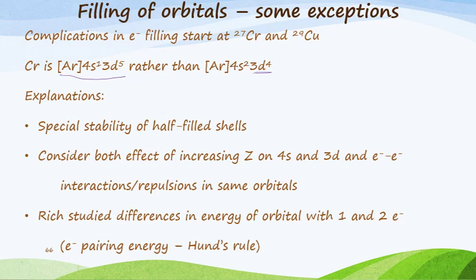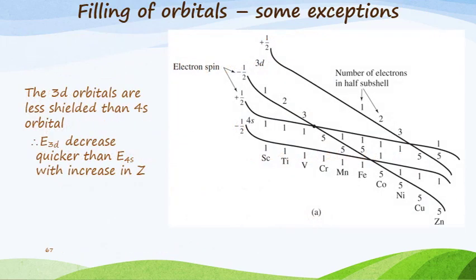We need to consider both the effect of the increasing value of Z on 4s and 3d and the electron-electron interactions in the same orbitals. There are studied differences in the energy of the orbital with one and two electrons, so we look at the pairing energy as well as Hund's rules. There are some exceptions where the 3d orbitals are usually less shielded than the 4s orbital, so the energy of the 3d orbital decreases faster than the 4s with an increase in atomic number.